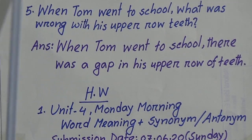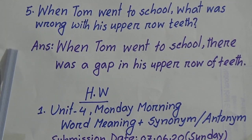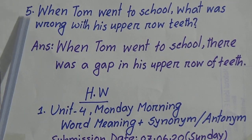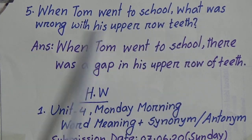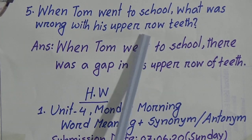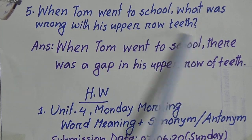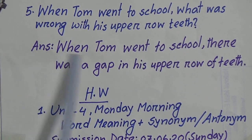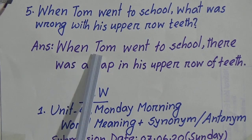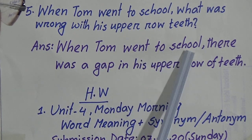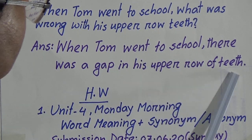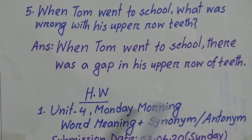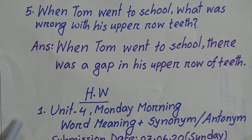We will move to question number five — we will not read questions three and four. Question number five: When Tom went to school, what was wrong with his upper row of teeth? Answer: When Tom went to school, there was a gap in his upper row of teeth.